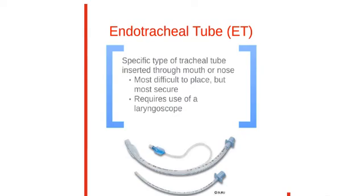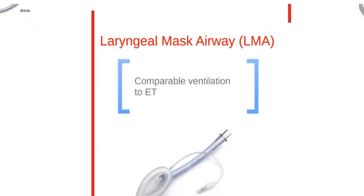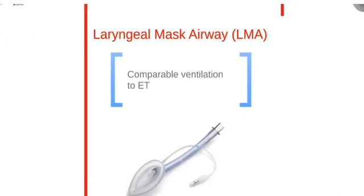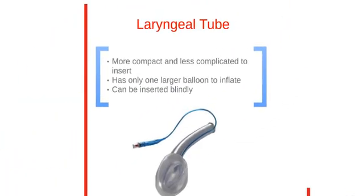This technique requires the use of a laryngoscope. The laryngeal mask airway is an advanced airway alternative to ET, but provides comparable ventilation. The laryngeal tube is similar to the esophageal tracheal tube — it is more compact and less complicated to insert. This tube has only one larger balloon to inflate and can be inserted blindly.